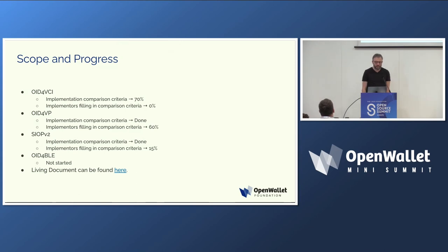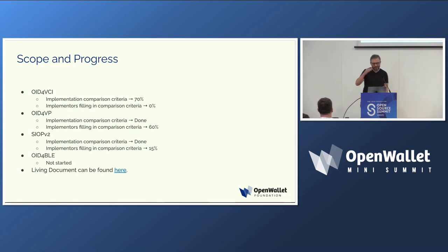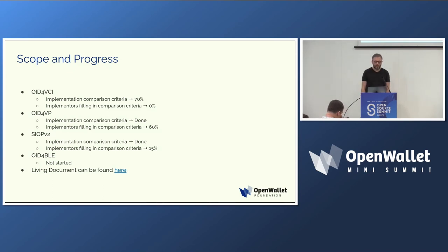For OpenID for VCI, we have created 70% of the criteria. As a spec writer, I have to admit there are two people really on my case right now: Joseph, who always wants to know in detail what I mean with certain text, and Hakan, who tries to break that down into features in the sheet. Christina and I realized we need to improve the spec a bit to make their lives easier — so that's already a really good feedback loop. We are not done yet with the implementation criteria for OpenID for Verifiable Credential Issuance, but we are done with the criteria for OpenID for Verifiable Presentations, and many implementers have already filled in the table.